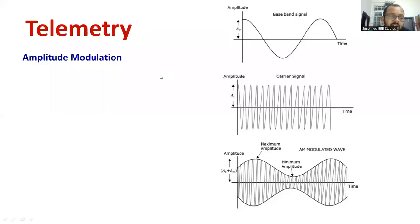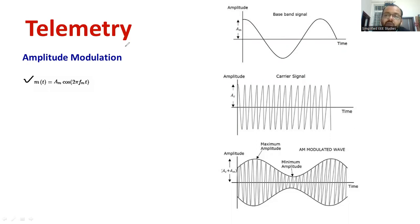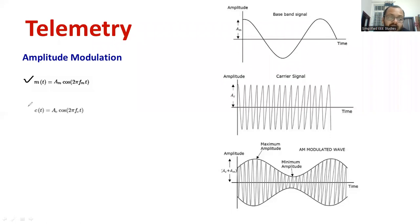Mathematically, the general equation of the message signal can be written as M(t), represented in the time domain: M(t) = Am × cos(2π·fm·t), where Am is the amplitude of the message signal and fm is the frequency of the base signal or message signal. For the carrier signal, the general expression is C(t) = Ac × cos(2π·fc·t), where Ac is the amplitude of the carrier signal and fc is the frequency of the carrier signal.